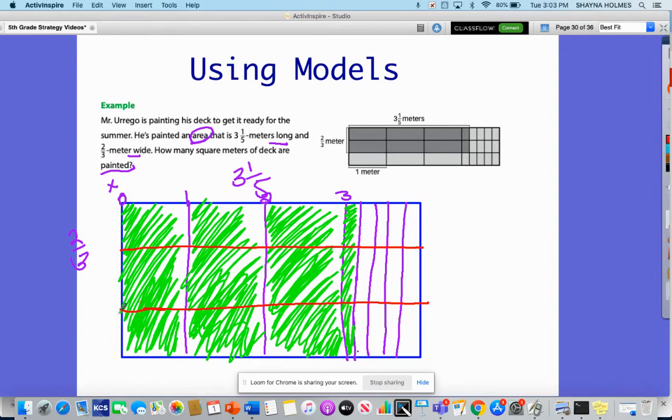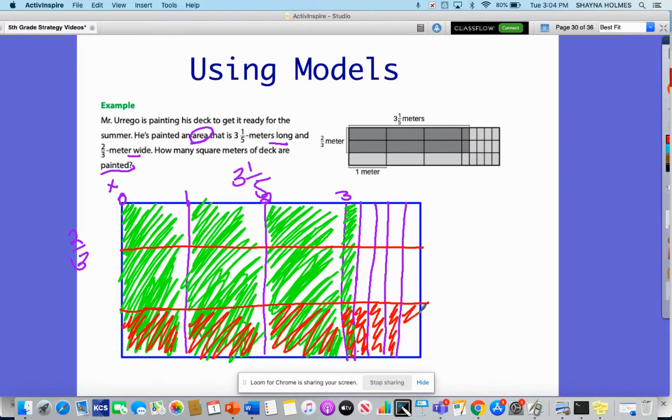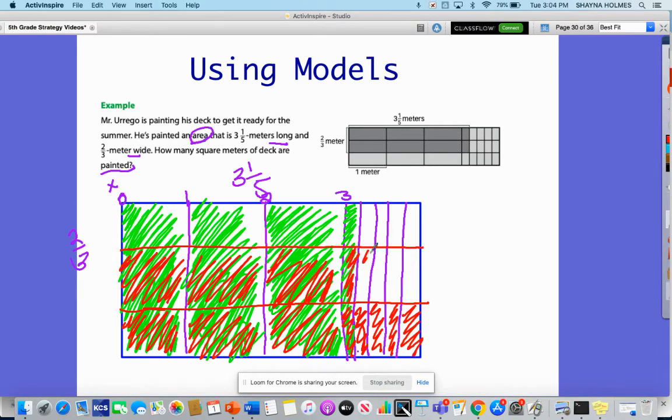Now I'm going to divide this into ⅔ on the sides. So ⅔ would be here, here, here, and then all of these pieces. I'm going to do the same thing here. So this would represent ⅔.